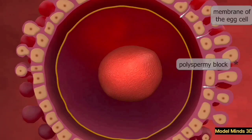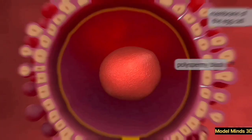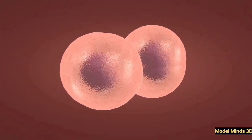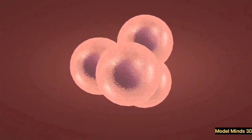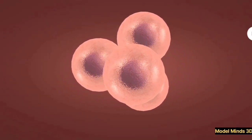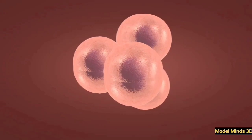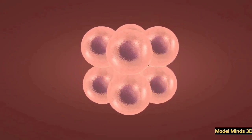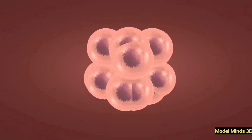The germinal stage is the first stage of prenatal development, lasting from fertilization to about two weeks. During this phase, the zygote undergoes rapid cell division, forming a cluster of cells known as a blastocyst.